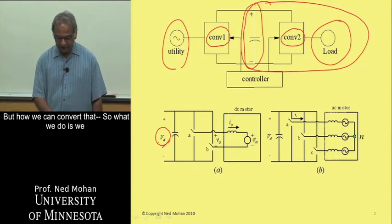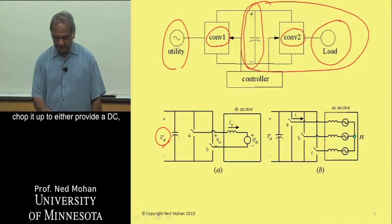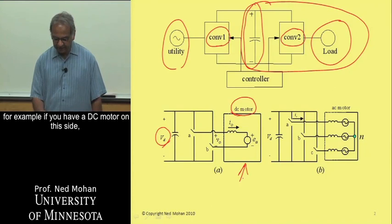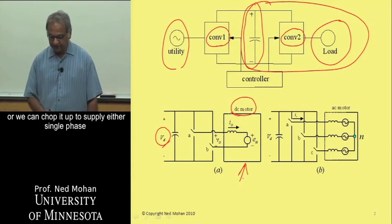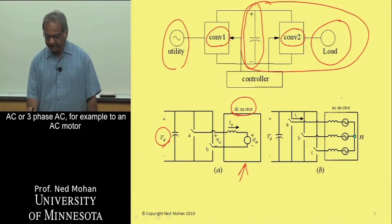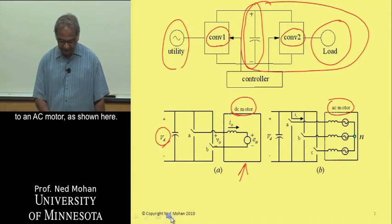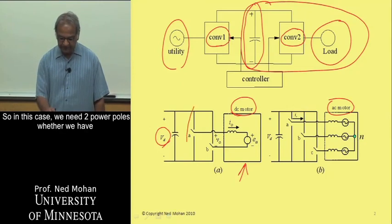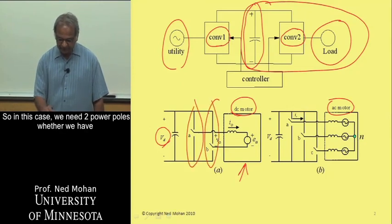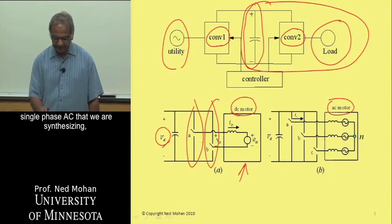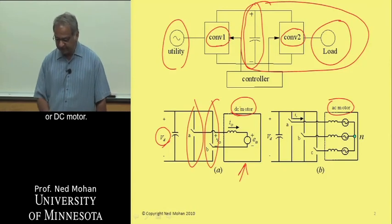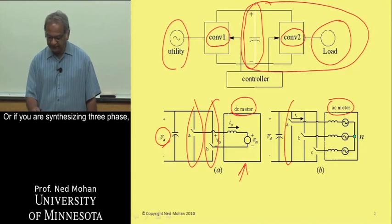So what we do is we chop it up to either provide a DC — for example, if you have a DC motor on this side — or we can chop it up to supply either a single-phase AC or three-phase AC, for example, to an AC motor as shown here. So in this case, we need two power poles, whether we have single-phase AC that we are synthesizing or a DC motor, or if we are synthesizing three-phase, then we have three power poles.